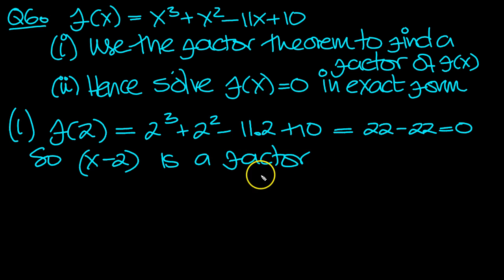Hence, solve f of x equals 0 in exact form. So I'm going to do long division here and not try and find another factor to this straight away using the factor theorem. So x cubed plus x squared, shouldn't take too long here, plus 10.